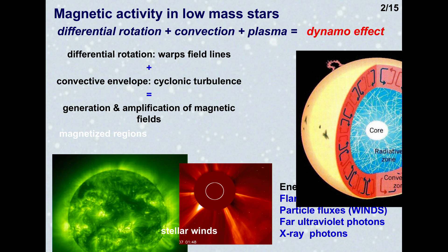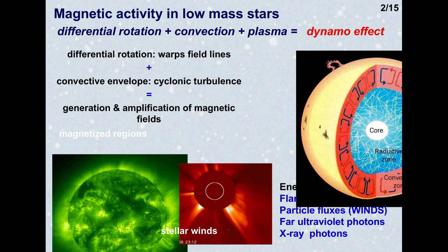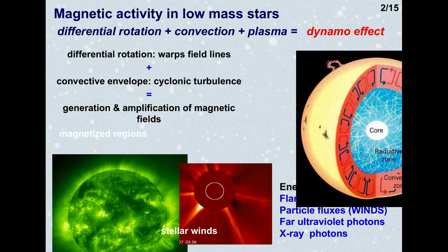We can study the sun in great detail and we watch the magnetized regions on the surface as they grow and then fade away. There are also flares — transient phenomena — and winds, the ejection of high energy, high velocity particles. All of these phenomena are common to low mass stars. So we have high energy photons and high energy particles participating in the evolution of the star, from about 1.5 solar masses downwards to the very lowest mass stars.